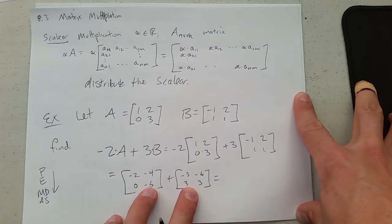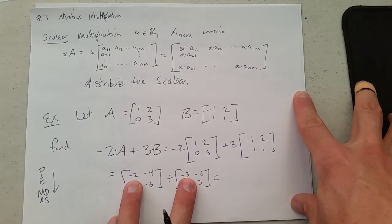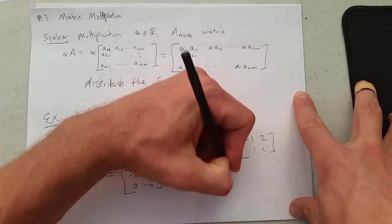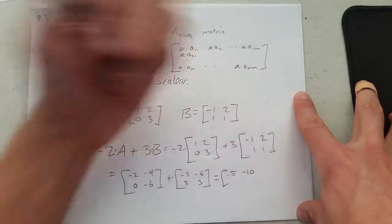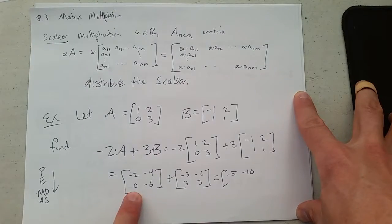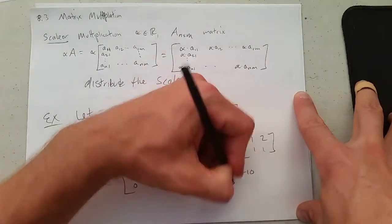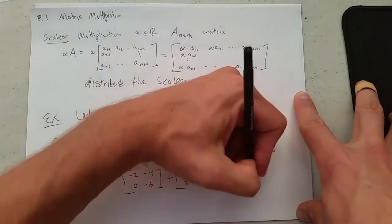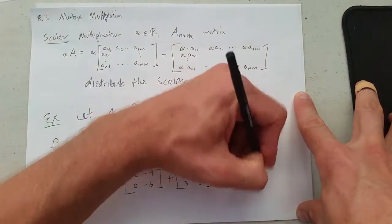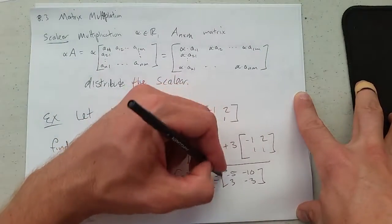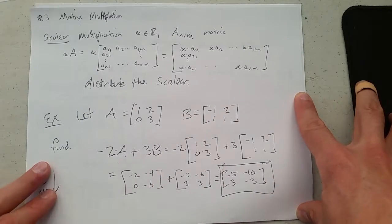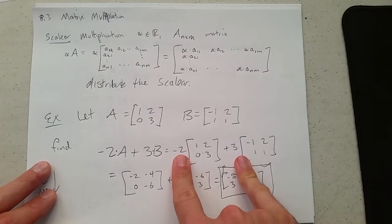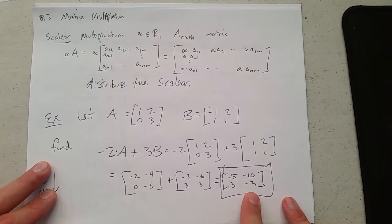And they have the same dimensions, 2 by 2. So we're going to add negative 2 plus negative 3 is negative 5. Negative 4 plus negative 6, negative 10. There's a lot of negatives. And 0 plus 3 is 3. Negative 6 plus 3, negative 3. So this is our answer to finding negative 2A plus 3B. So do your multiplication first, your addition second.